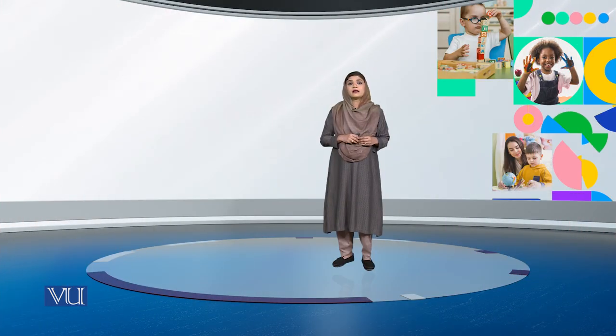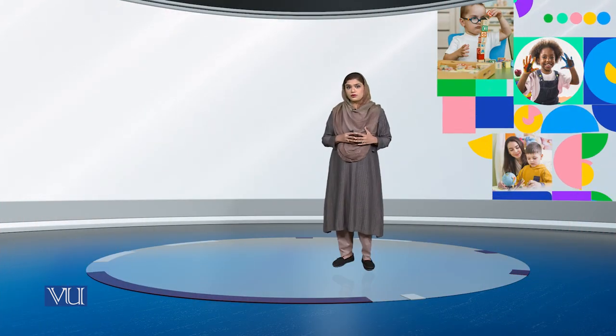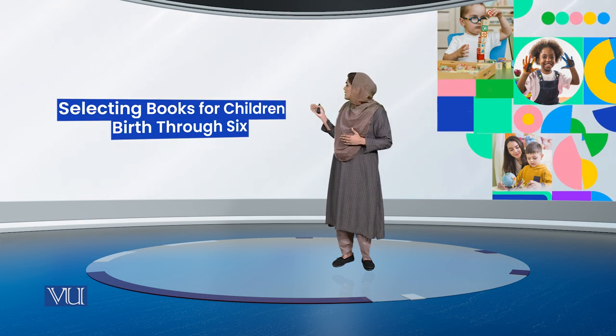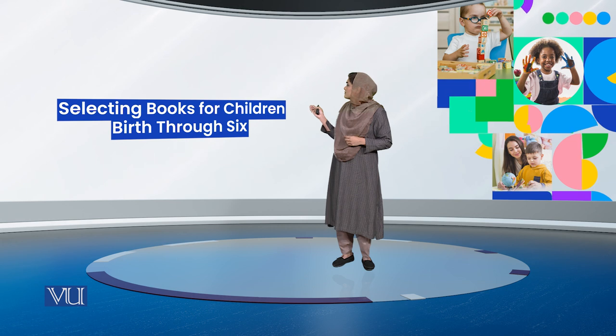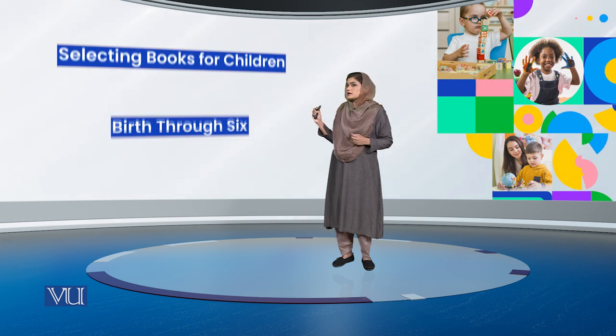When we complete that, we will go to Unit 1 Topic Number 2. We will see in Topic Number 2 what topics we have. It is about selecting books for children, birth through six.